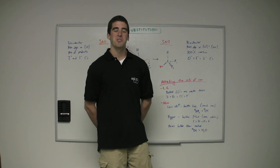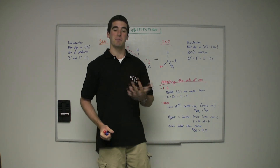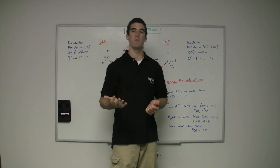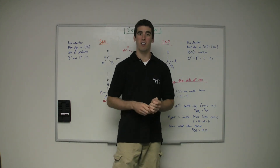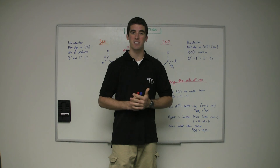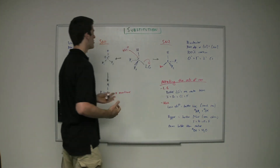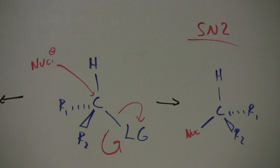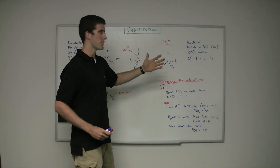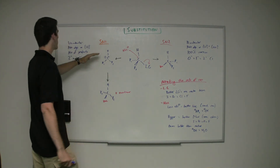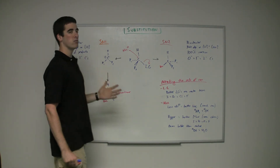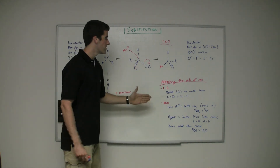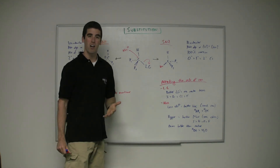Hey guys, this is John with Far From Standard Tutoring. In this video I'm going to explain substitution reactions more in depth than the previous video, which is more of an overview of all the reactions considering elimination and substitution. There are two types of substitution: the SN2 reaction, which is the bimolecular reaction — one step — and the SN1 reaction, the unimolecular reaction — two steps. I'm going to go through the mechanisms for both and then go through certain characteristics that affect the rate of the reaction.